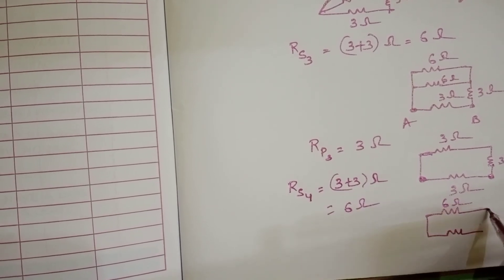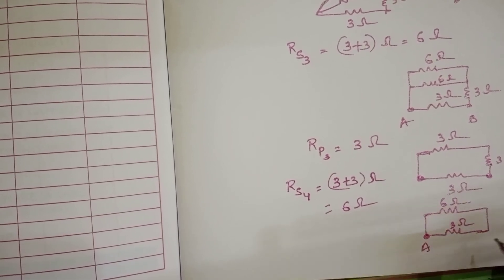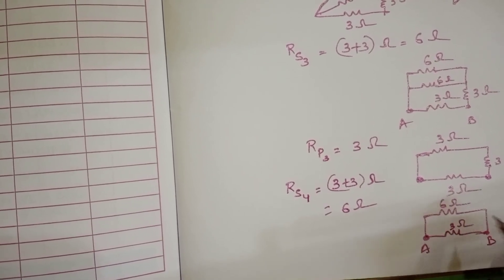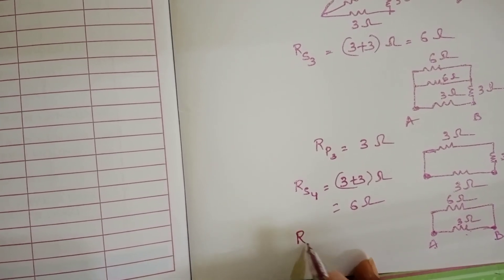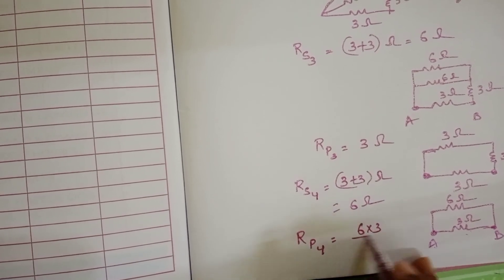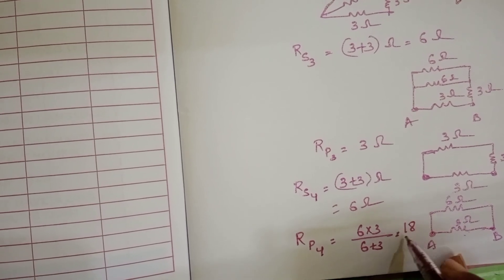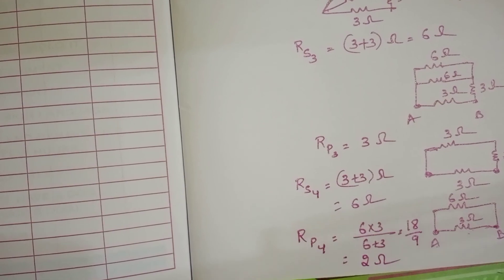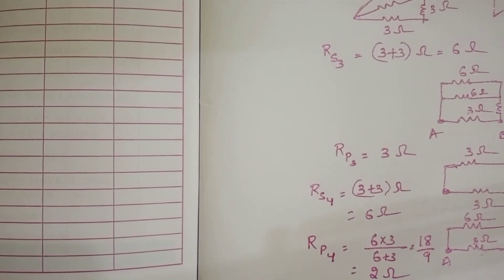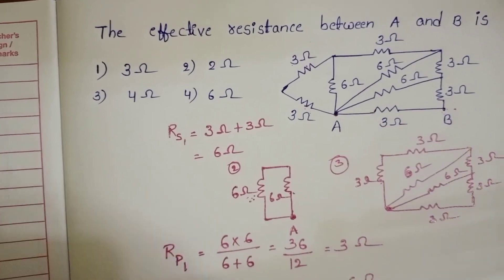And here 3 ohm, point A, point B. Finally these two resistors are in parallel. So 6 into 3 by 6 plus 3 gives 18 by 9, that is equal to 2 ohm. The equivalent resistance in between A and B is equal to 2 ohm.